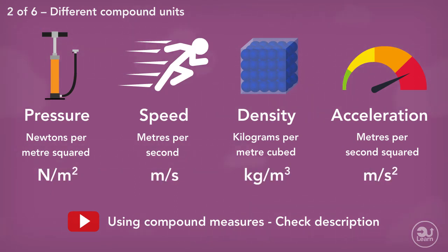Pressure is newtons per meter squared. Speed is meters per second. Density is kilograms over meters cubed. And acceleration is meters over seconds squared.